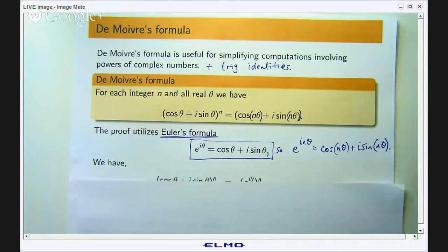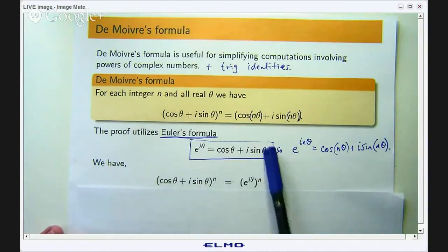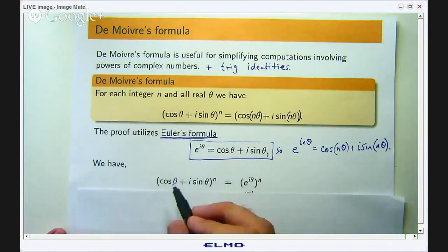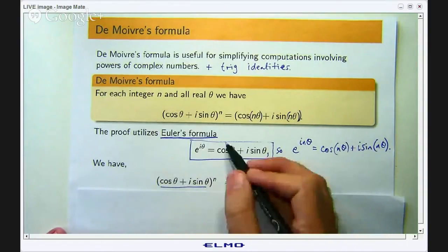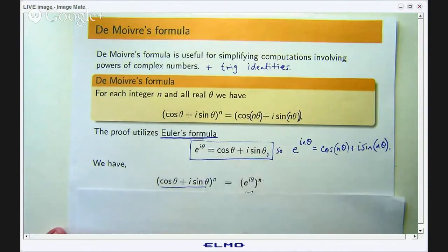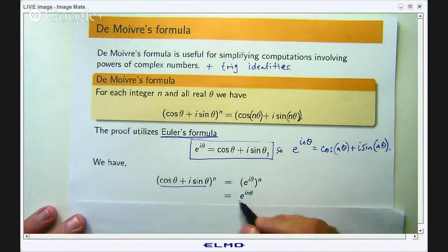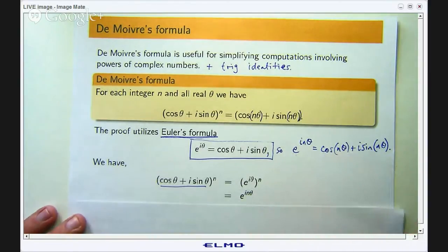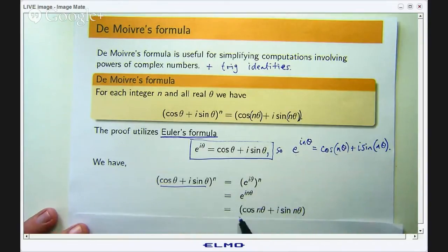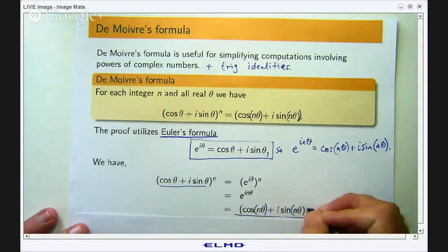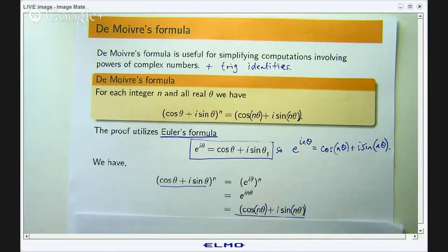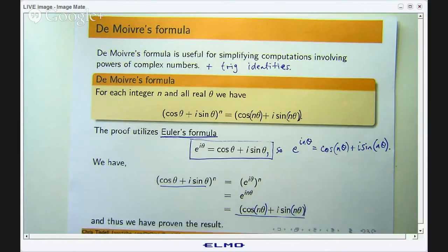So now using this, I can basically start with that and raise both sides of Euler's formula to an integer power n and then I can just use my exponent laws. So that n will come inside and multiply through by the iθ and we get this, and we know from up here that this is this. So I get De Moivre's formula in two or three easy steps. So we have proven the result.